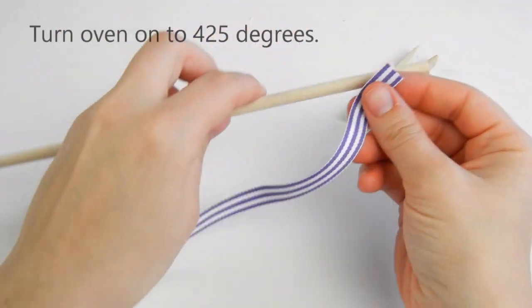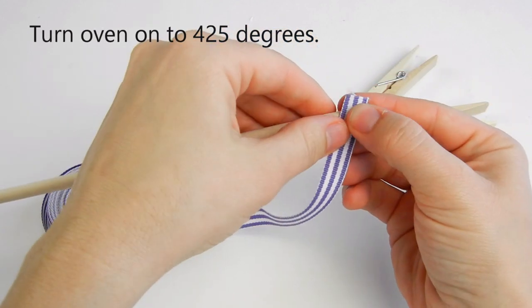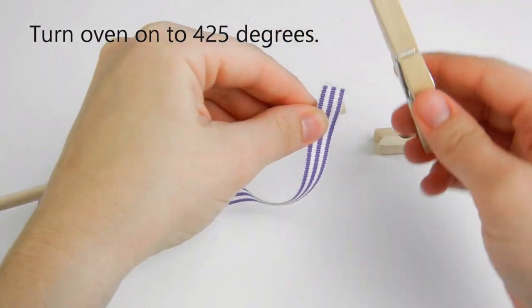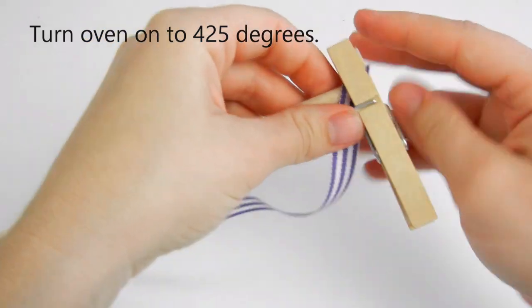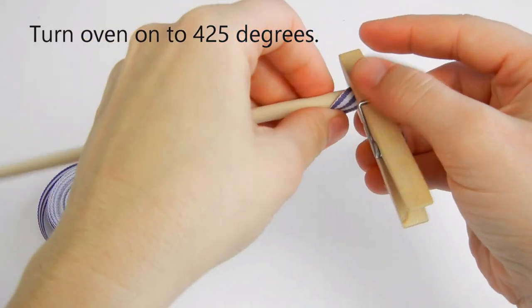Start by taking the end of your ribbon and putting it on the end of your dowel, and then pin it down with your clothespin. Then you're going to start twisting your ribbon.